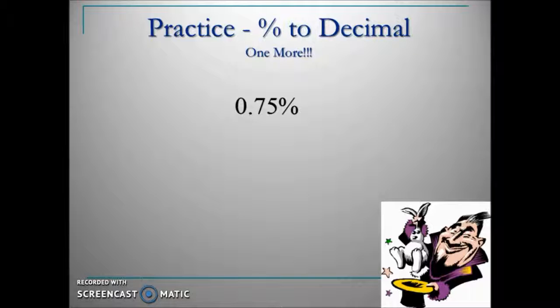Now we follow the procedure that we have with the previous ones. Remove the percent sign and move the decimal two places to the left. There's only one zero there. We'll have to include another zero.